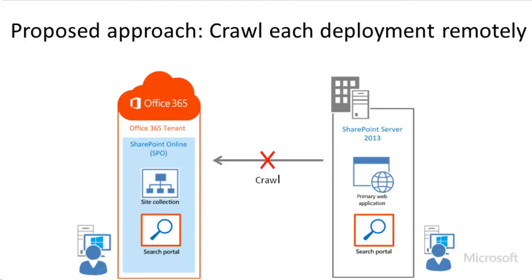Similarly, to enable Search Solution 2, why not have the search service in SharePoint Online crawl the content in both deployments? If we could do that, all of the crawled content would go into a search index in SharePoint Online that users could query from the SharePoint Online Search Center. However, this isn't possible either, because SharePoint Online can only crawl content in SharePoint Online.